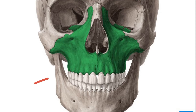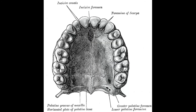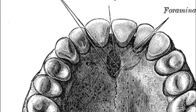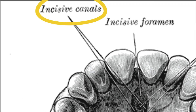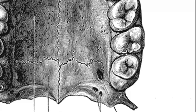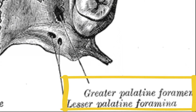With the maxilla, you've got the alveolar processes where the teeth fit in, just as with the mandible. On the palatine part of the maxilla, you've got the incisive foramen, which leads to the incisive canal. This canal is important because the nasopalatine nerve and the sphenopalatine artery pass through it. You can also see the greater and lesser palatine foramina for the greater and lesser palatine nerves respectively. That's it for this video — see you in the next one, take care!